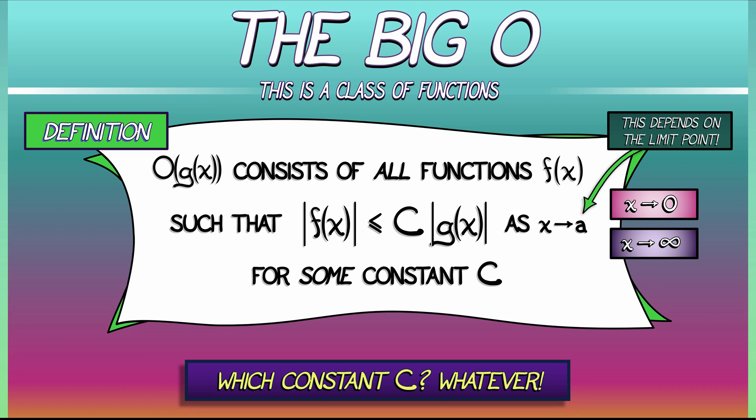Big O is a class of functions. Big O consists of all functions f such that f is bounded by g times some constant c, everything in absolute value in the limit. Maybe it's going to zero, maybe it's going to infinity. It's kind of a mouthful. Things you gotta remember. Don't forget the absolute values. Don't forget about the constant c, but it doesn't matter what the constant c is.